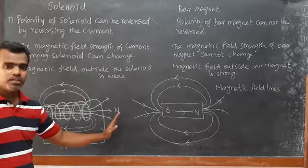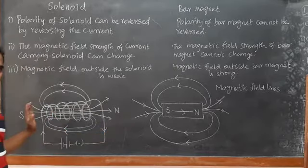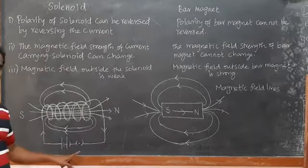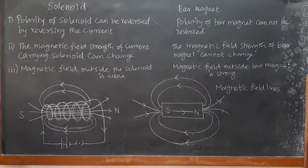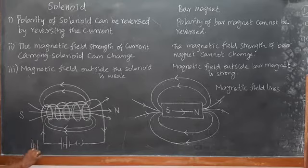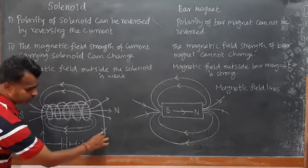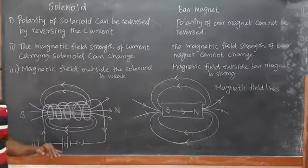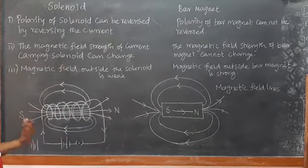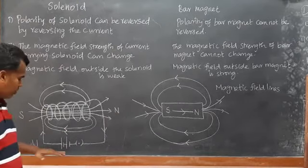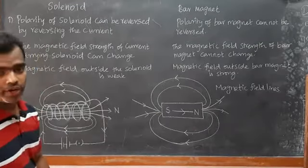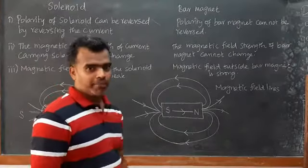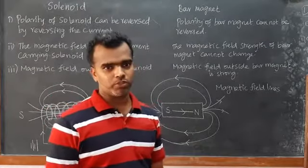If we want to change the polarity of the solenoid — making the current-side end south and the other end north — we reverse the current by changing the battery connection. The current then flows in the opposite direction, reversing the poles. In contrast, for a bar magnet, we cannot change the north and south poles.